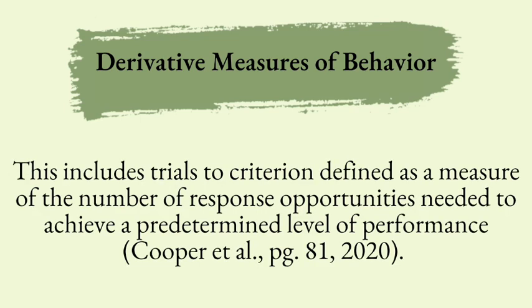This includes trials to criterion. Trials to criterion is defined as measures of the number of responses or opportunities needed to achieve a predetermined level of performance. In other words, it's a certain number of trials or presentations of a skill that need to occur before a person is considered proficient.